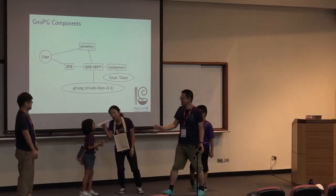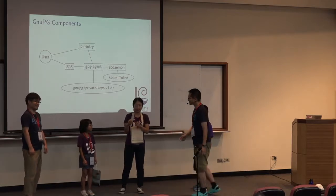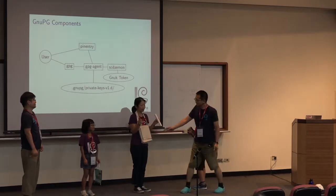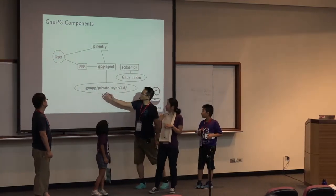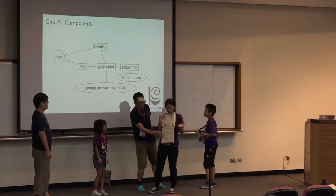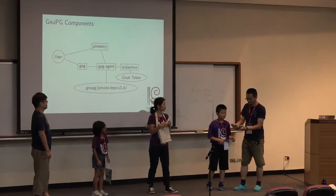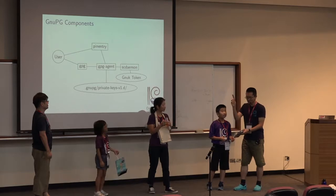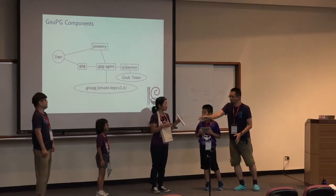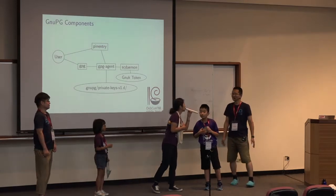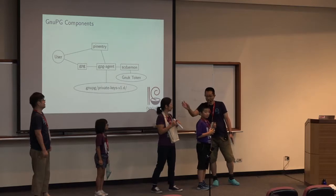Then she asks the GPG Agent. This represents a pipe or socket. Usually she has a key in the file system. But today, as I represent here, usually the private key is in the file system or in a box. But this time, my private key is inside this token. It's securely stored inside the GNUK token. Then GPG Agent forwarded a request to SC Daemon. It is a special protocol between GPG Agent and SC Daemon.